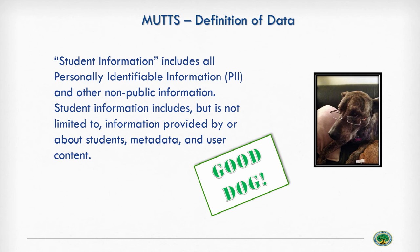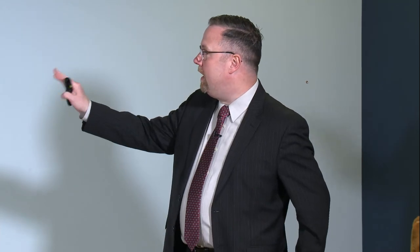A better approach would have been: student information includes all personally identifiable information and other non-public information. Student information includes but is not limited to information provided by or about students, metadata, and user content. This establishes a very broad definition of what is covered in the subsequent provisions of the agreement. This is what a good dog provision would include.